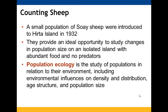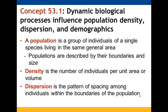Environmental factors influence their distribution, age structure, and population size. Populations are a group of individuals of a single species living in a general area. We define them more specifically by their boundaries and size. Density refers to the number of individuals within that population per unit area or volume, and dispersion is how they are spaced throughout the boundaries of that general area.